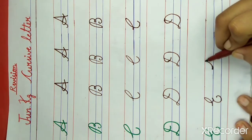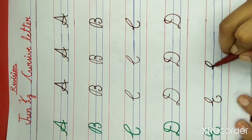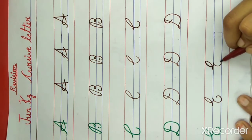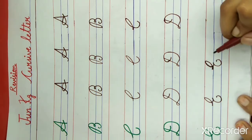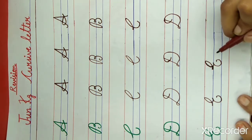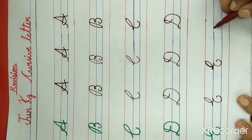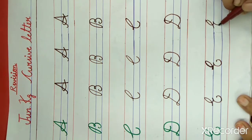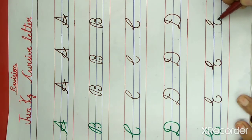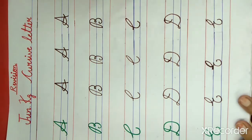Now again a small curve, and again a small curve, and a small semicircle, and stop here. What is this? This is letter E. E for elephant. Now we also do the practice of letter F. F for fish.